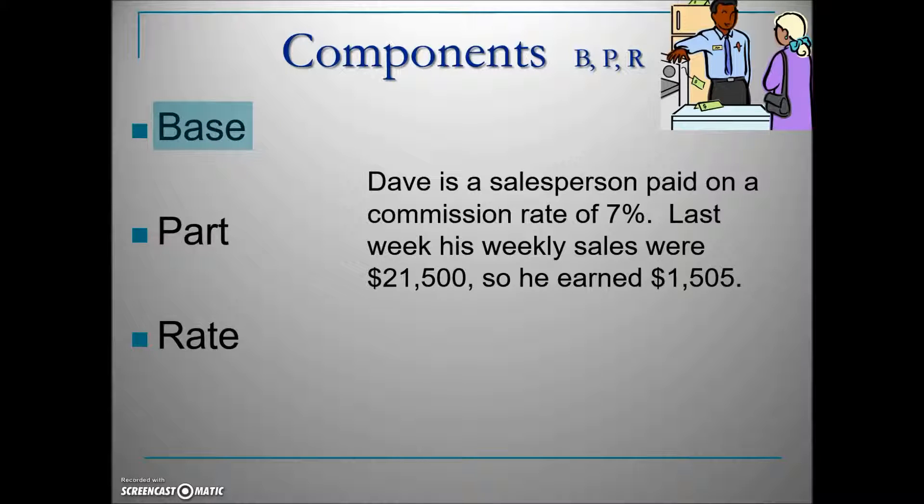The base is the total amount, which is his total weekly sales: $21,500. The part is the portion of that total—his commission or earnings: $1,505. Again, the rate is easiest to identify because it's the percentage. Obviously, 7% is the rate.